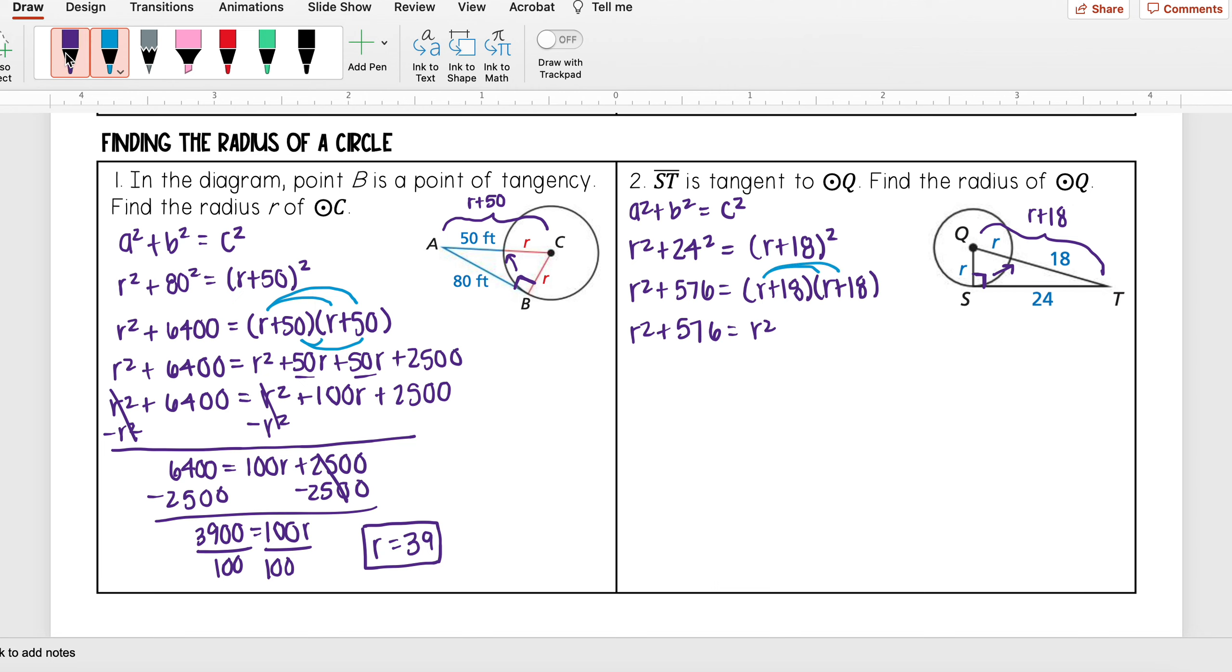Then now I need to distribute this out. So I have R times R and I get R², R times 18 and I get 18R, 18 times R and I get 18R, and then 18 times 18 and I get 324. Simplifying that right-hand side, I can combine my middle terms and I get R² + 36R + 324.